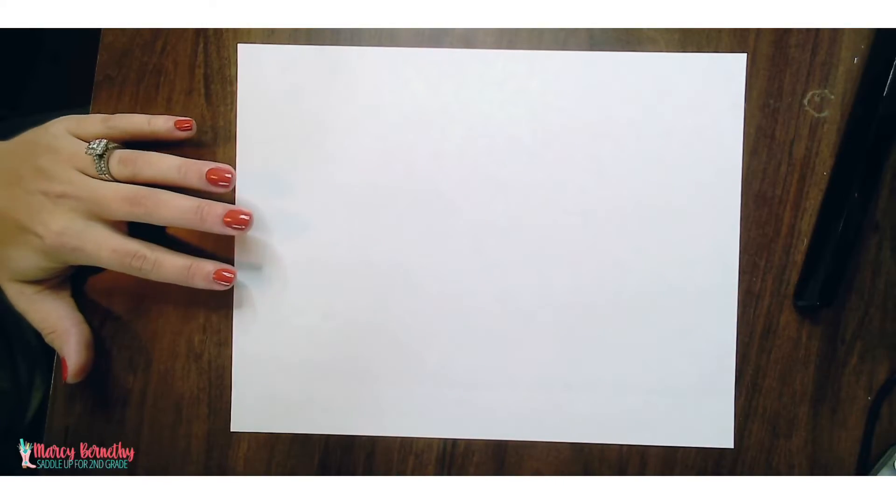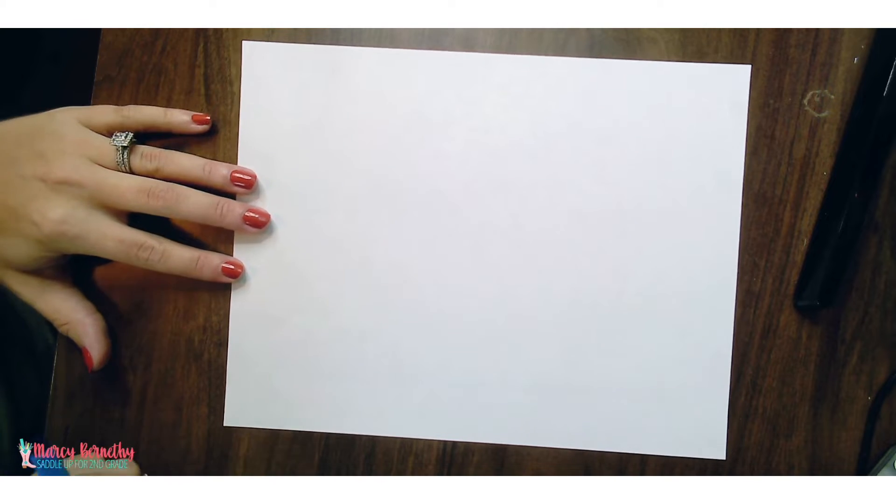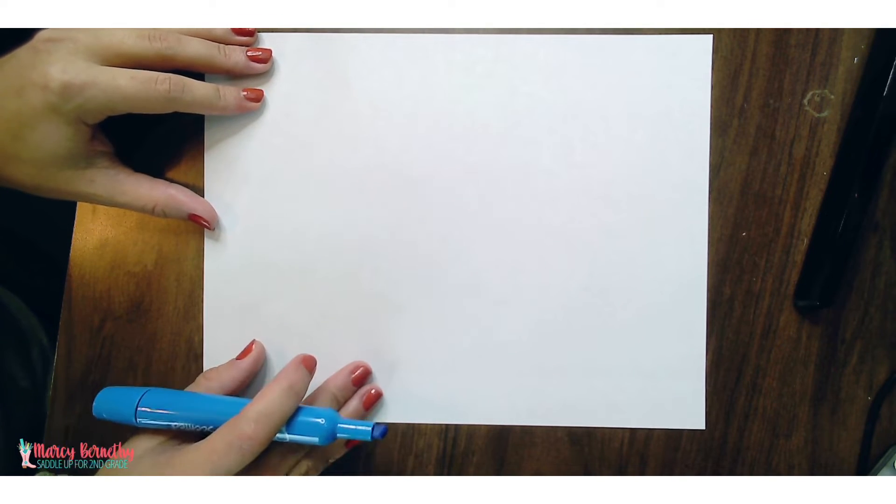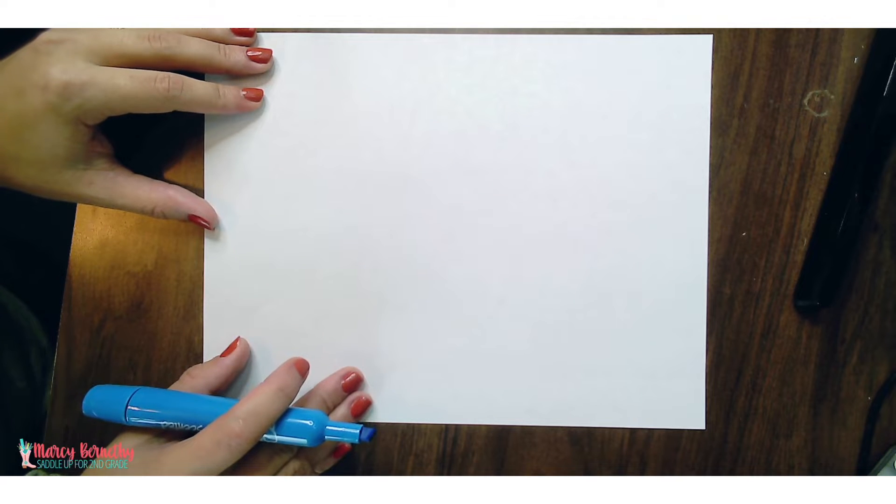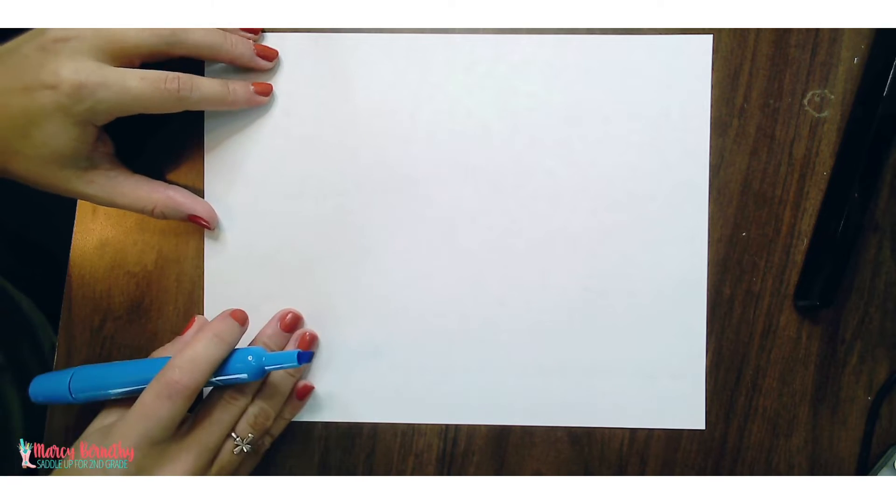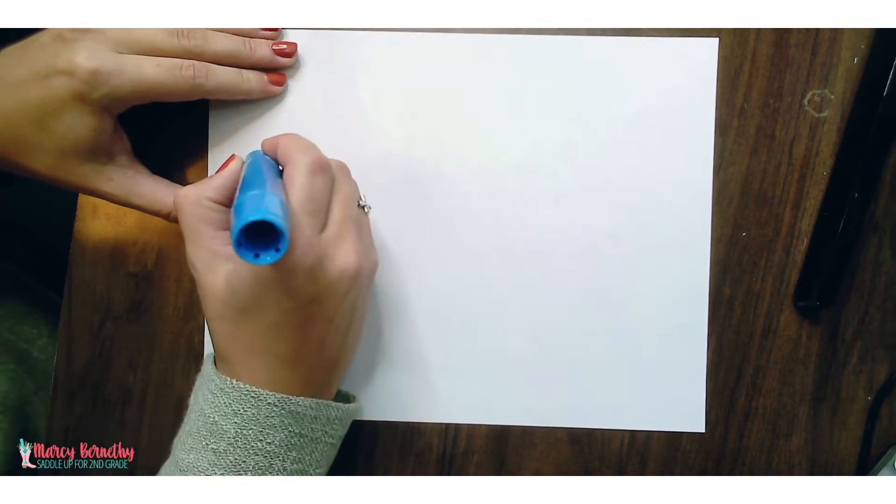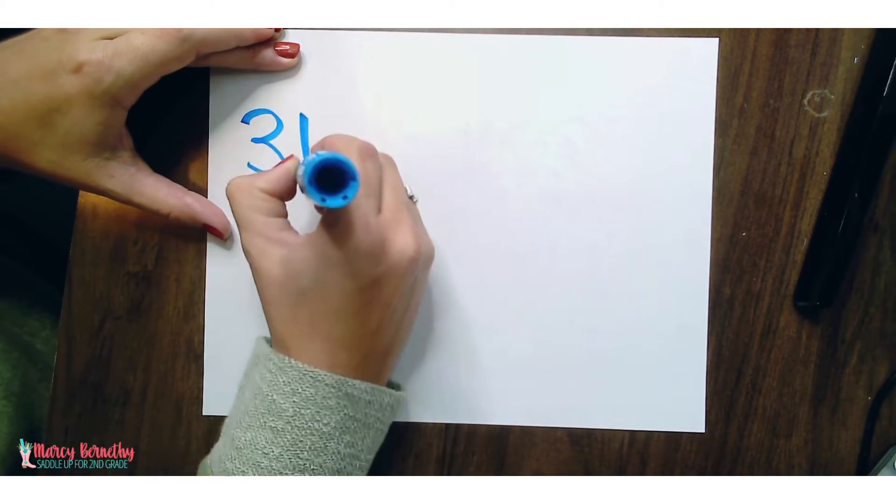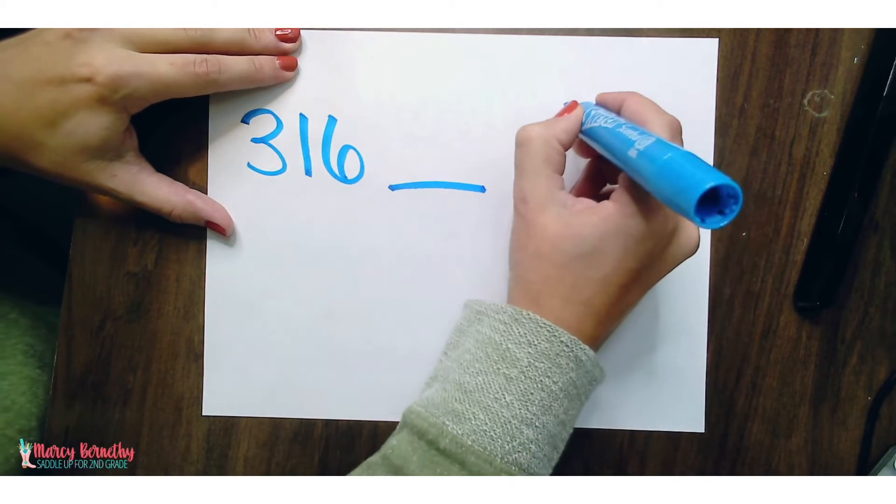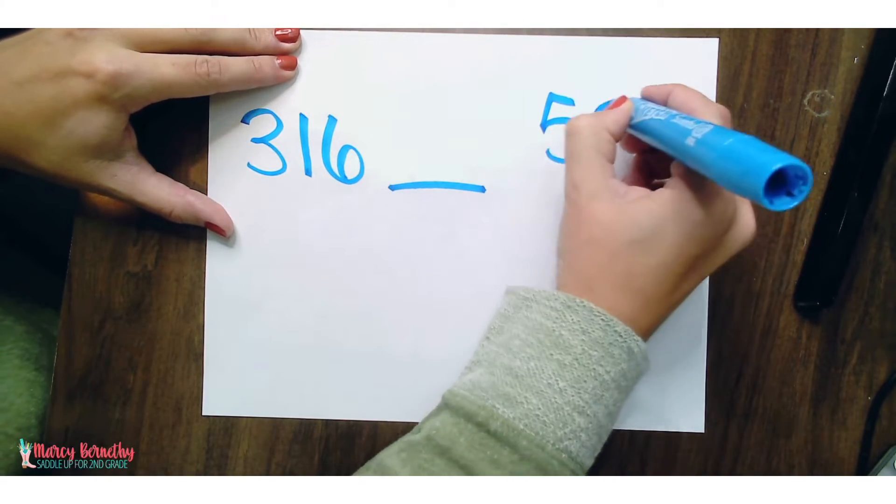The dot method for comparing numbers is actually really simple. You're going to have your students write the two numbers that they are going to compare, or they might already be pre-written. So let's say we are going to compare the numbers 316 to 524.